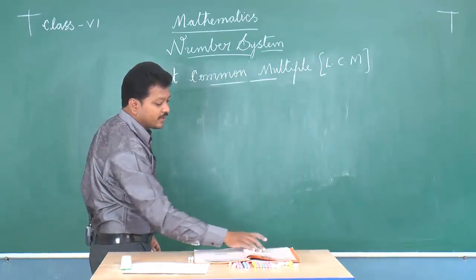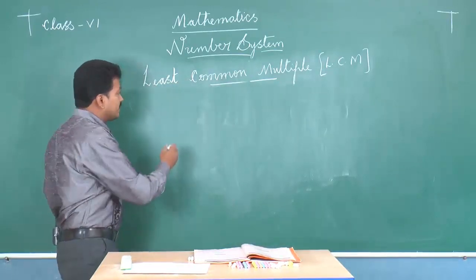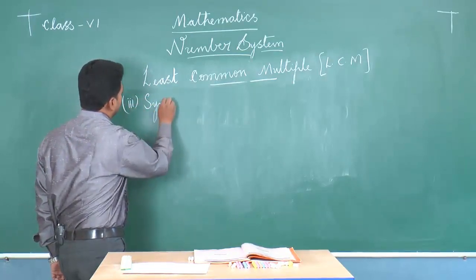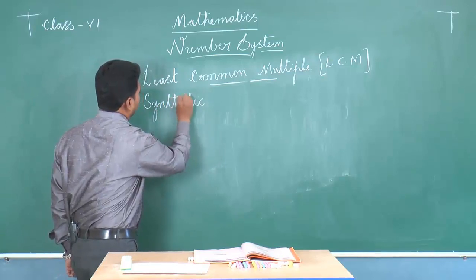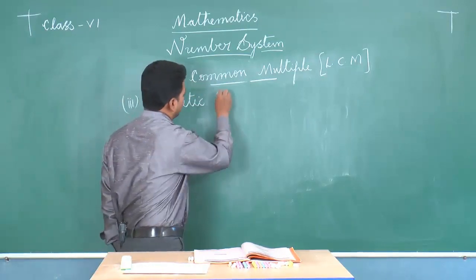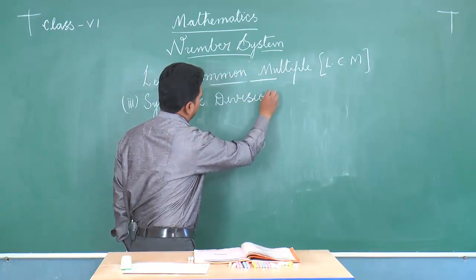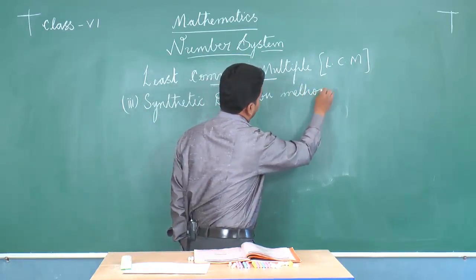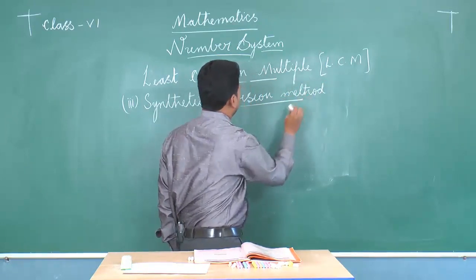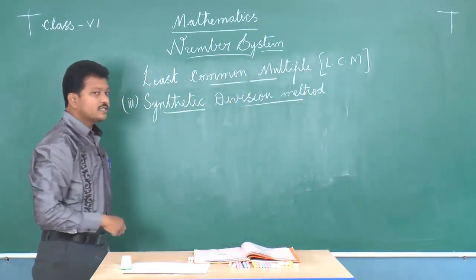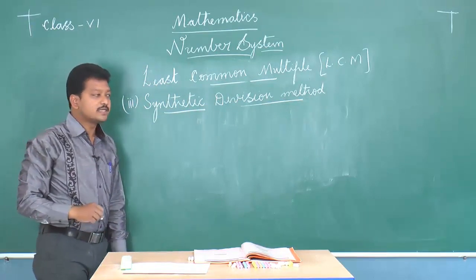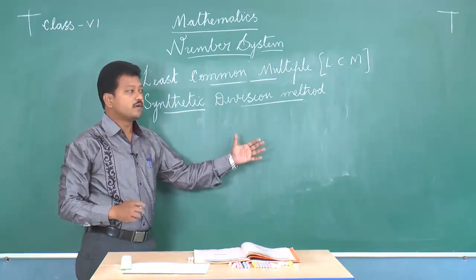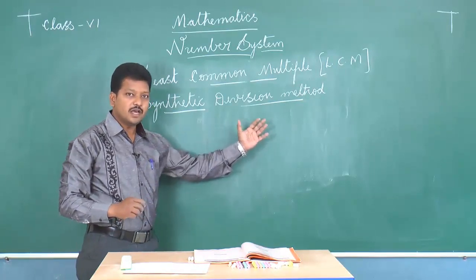The next method is the synthetic division method. In this method, we write the given numbers — either two or more — in order in a row, separated by commas.